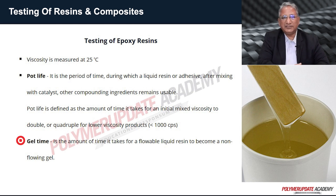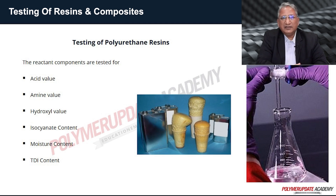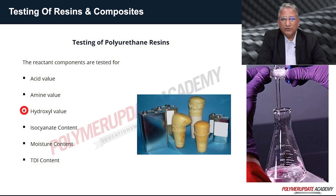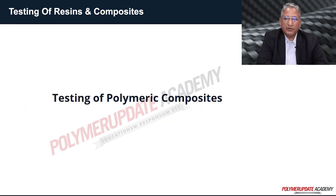Epoxy resin is also tested for gel time, which is the time required to change a flowable liquid resin into a non-flowable gel. For polyurethane resins, the reactant components are tested for acid value, amine value, hydroxyl value, isocyanate content, moisture content, and TDI content.